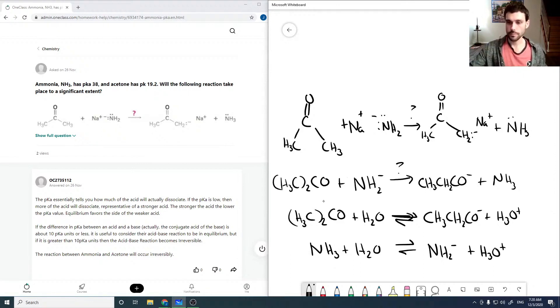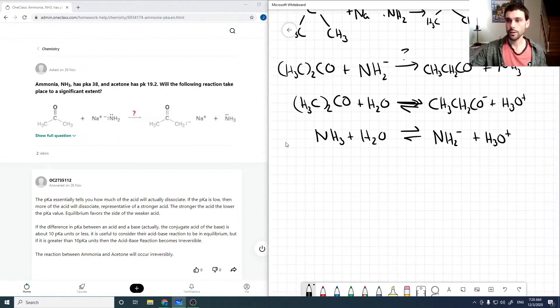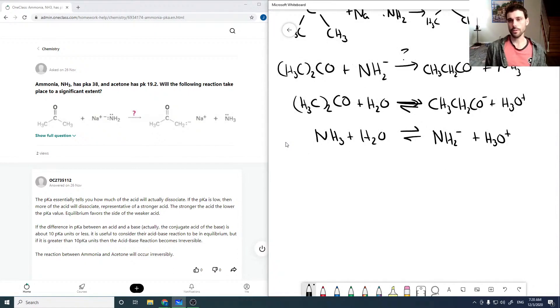And so if we look at our equilibrium expressions here, our K here is H3O plus times CH3CH2CO minus over H3C2CO. So I'm just going to leave this like this and say that's for acetone.